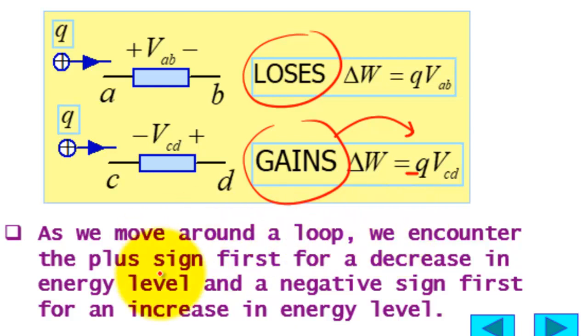As we move around the loop, we encounter the plus sign first for a decrease in the energy level and negative sign first for an increase in energy level. So if a positive charge comes across a positive sign, it loses energy, and if positive charge encounters a negative sign, then it gains energy.